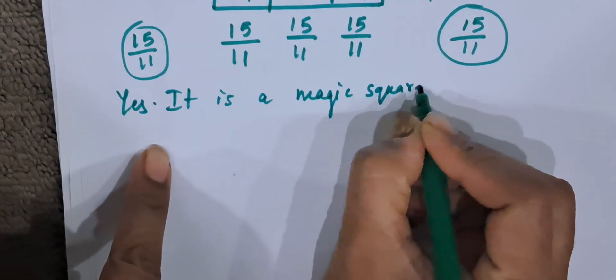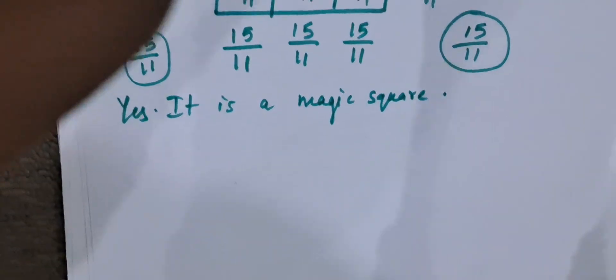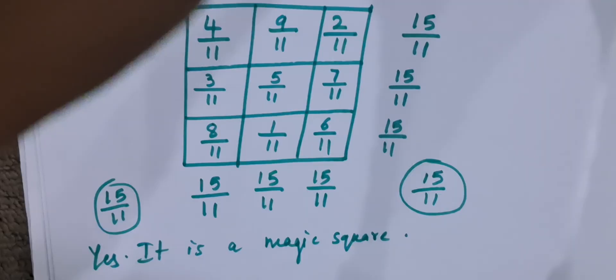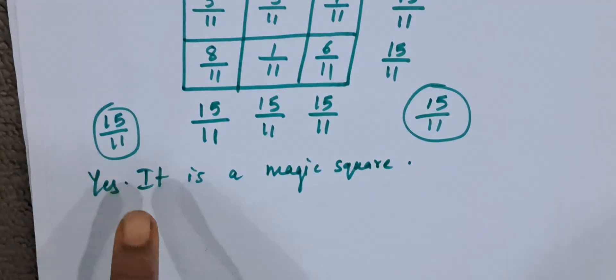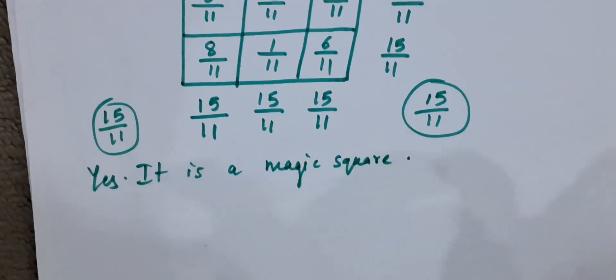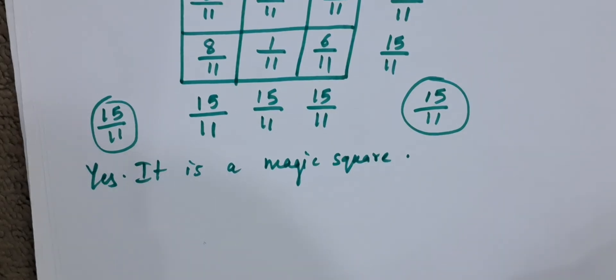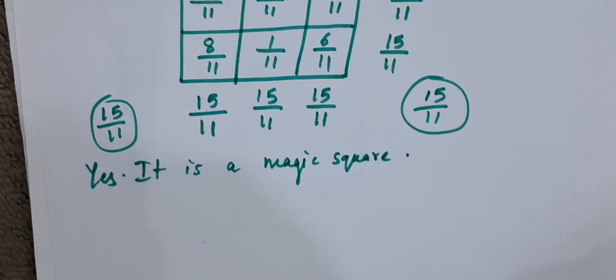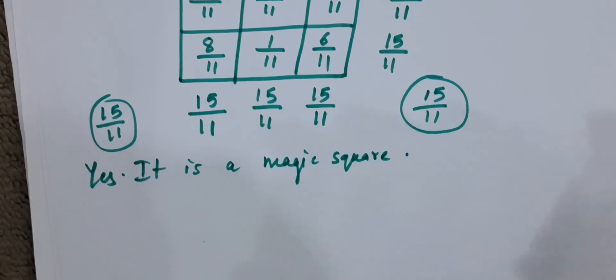Children, you all have to add like this and verify it. And write down, if it is yes, then we have to write yes, it is a magic square. Hope you all understood the video. If you liked the video, please like and subscribe to my channel. Thank you.